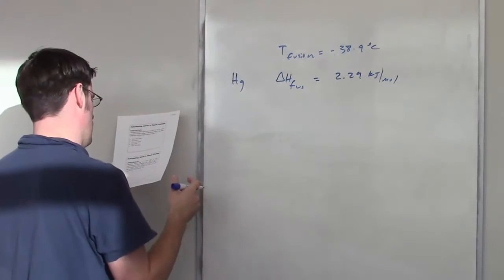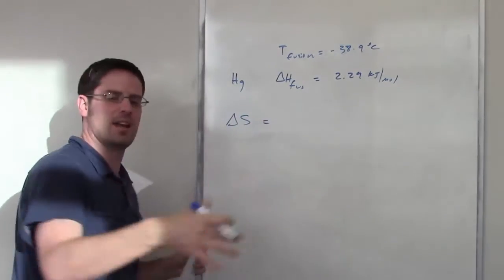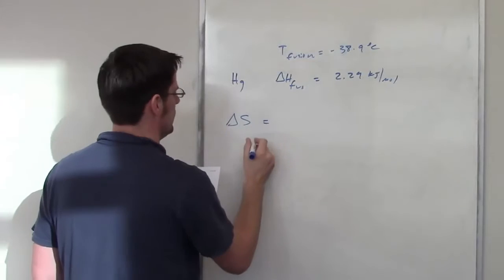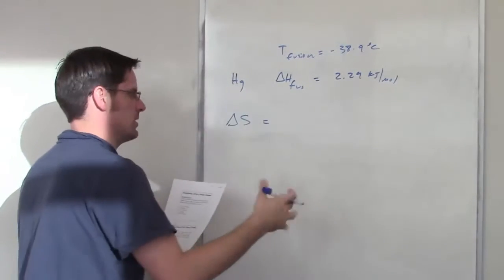It then asks me what the entropy of, or sorry, the change in delta S, or entropy change of fusion is for 50 grams of mercury undergoing fusion.